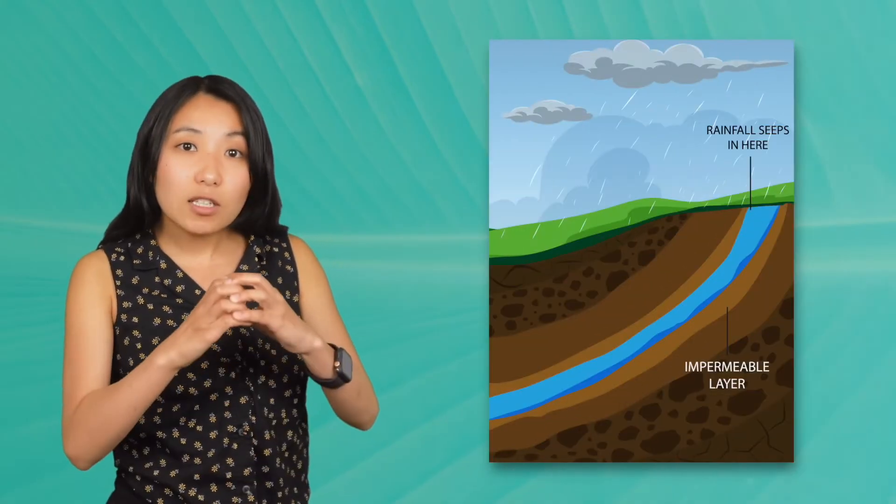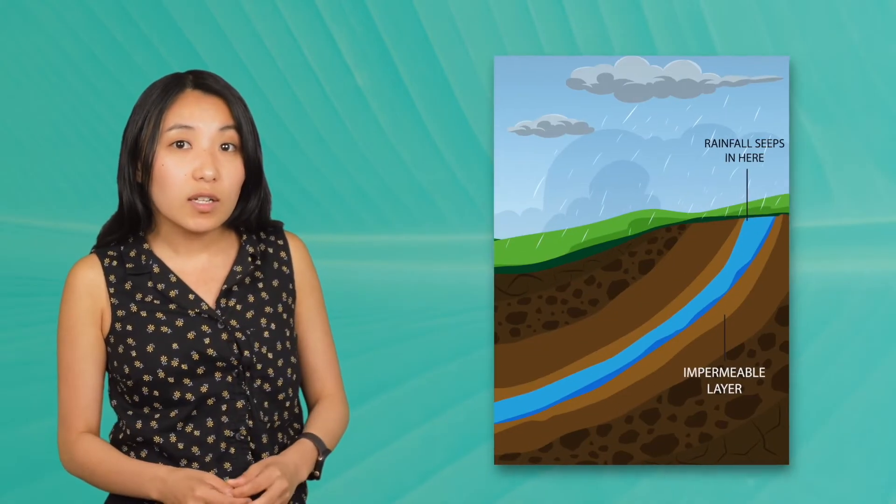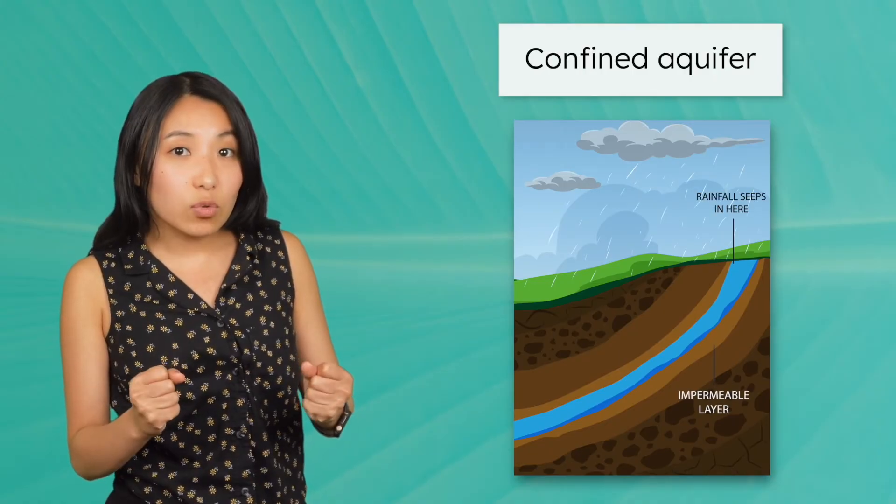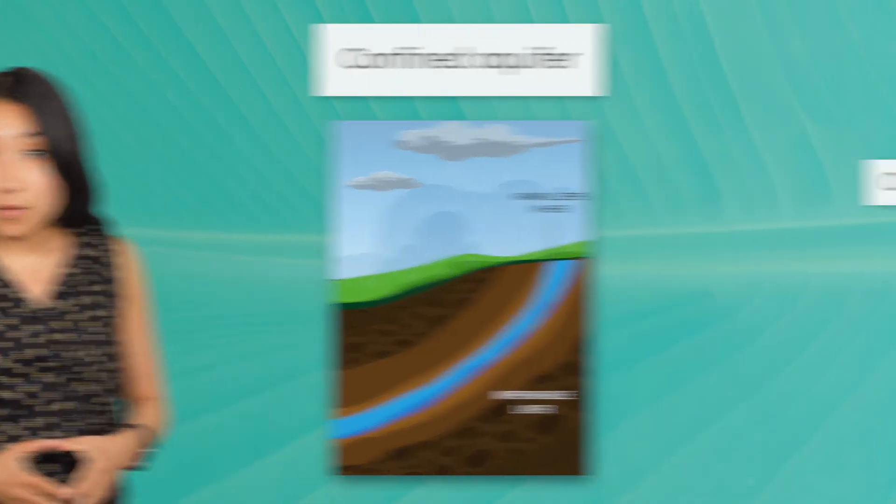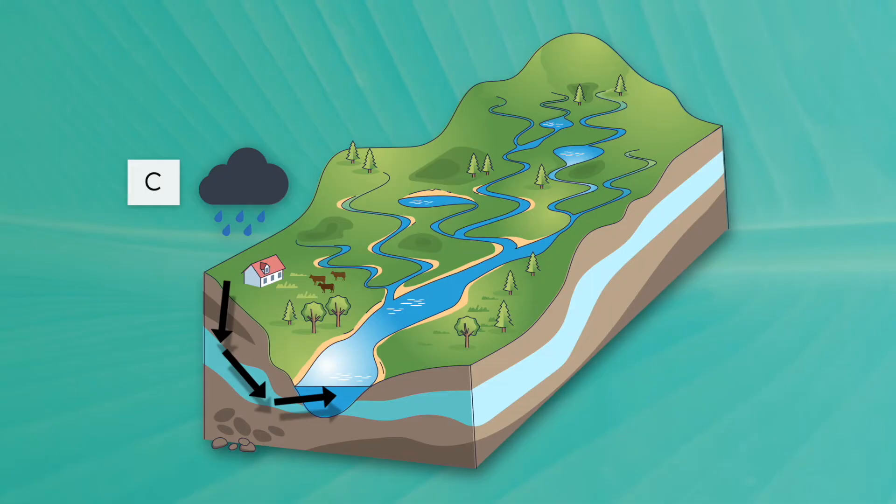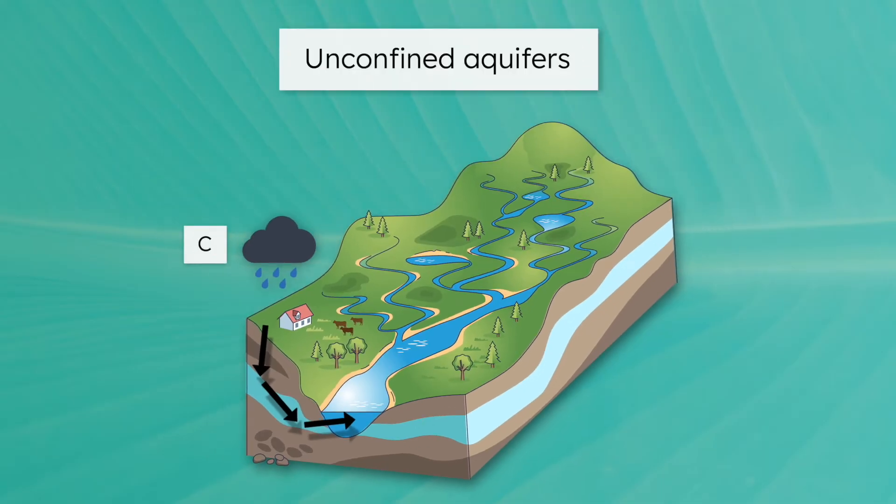If water is stored in tight underground material like solid rock, it becomes confined or trapped in one place. However, if the underground material is composed of sand, loose soil, or rocks with holes, the water can move freely through the empty spaces. These are called unconfined aquifers.